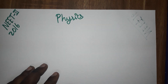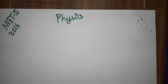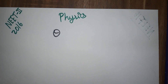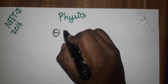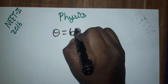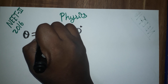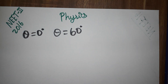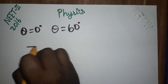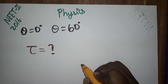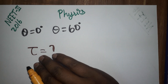Now we'll see how to solve this problem. The angle of rotation is taken initially as zero degrees, and the coil is rotating to 60 degrees, which is given in the question. They are asking what is the torque, but the four options are given in terms of work done, so we have to find the relation of torque with work done.